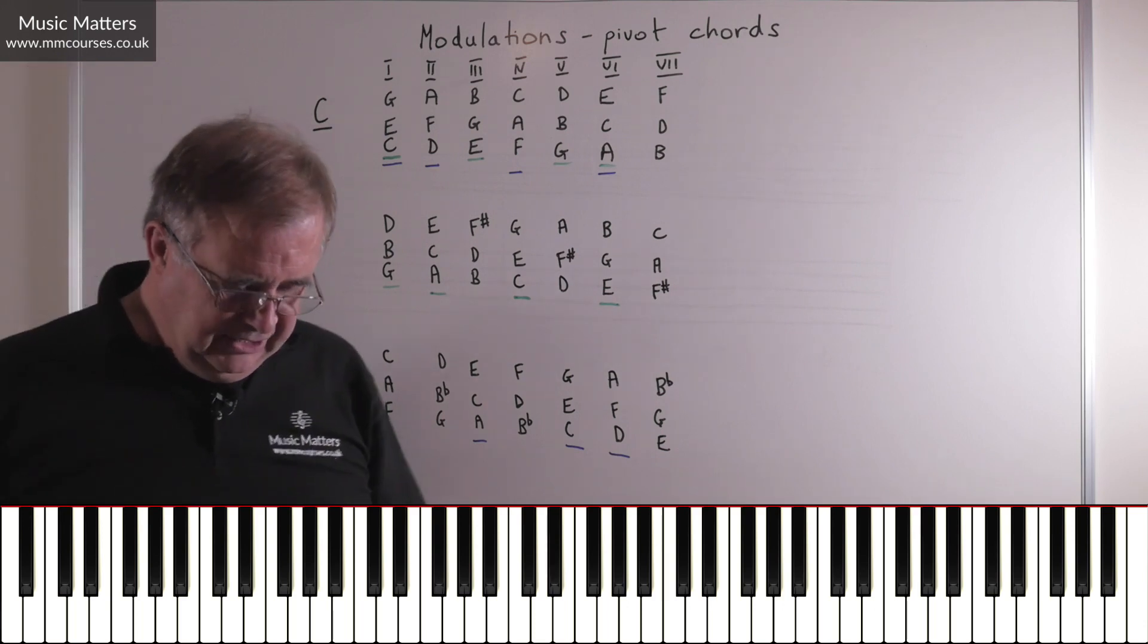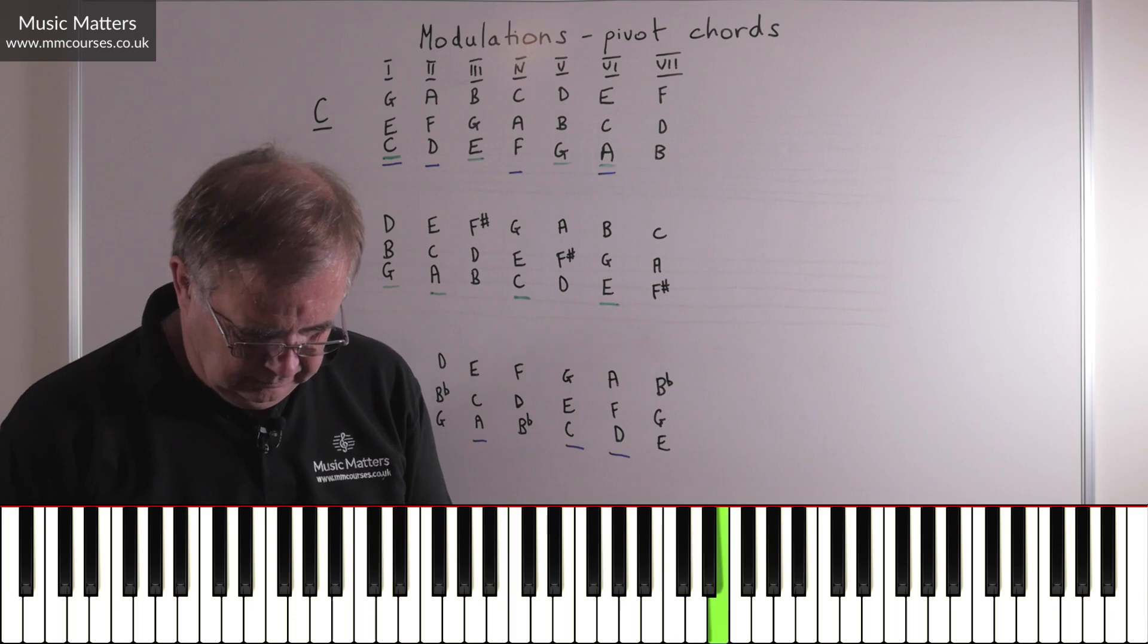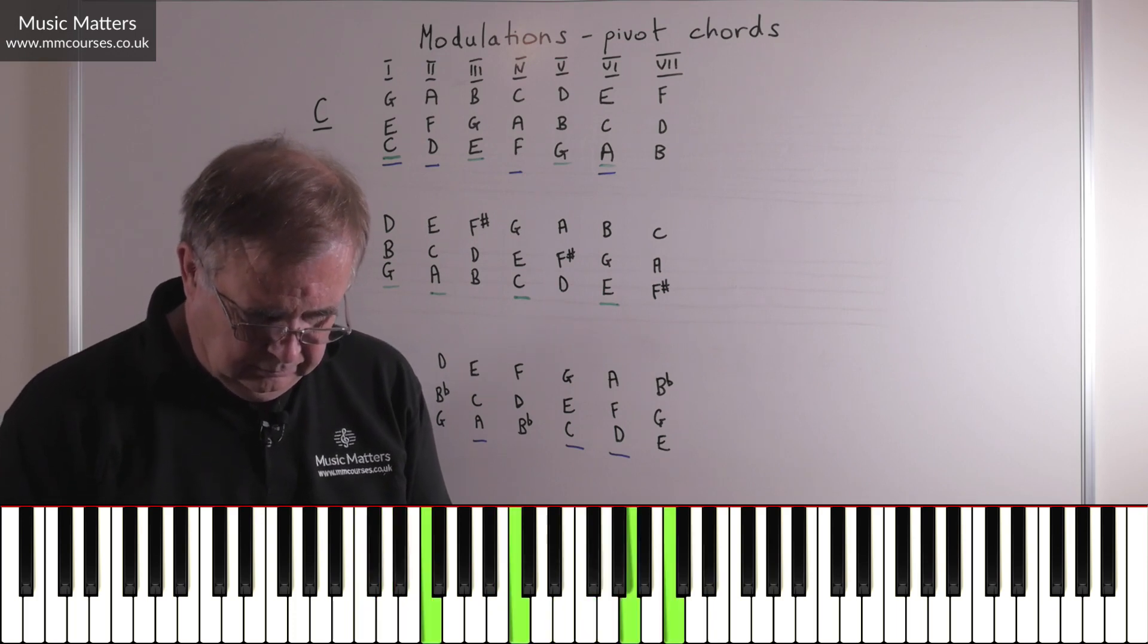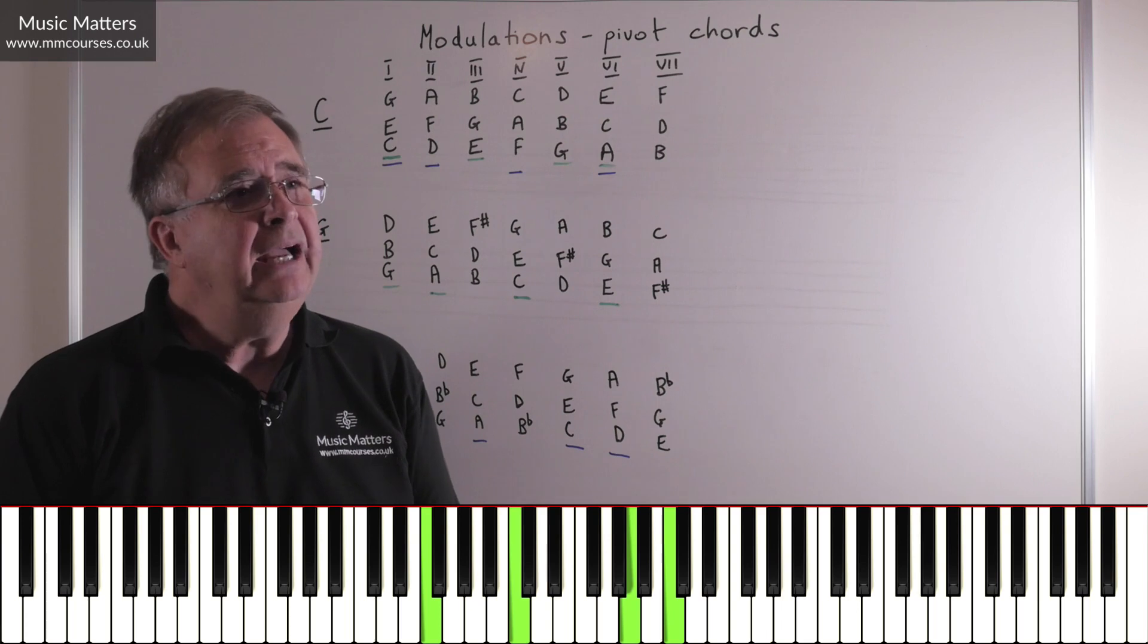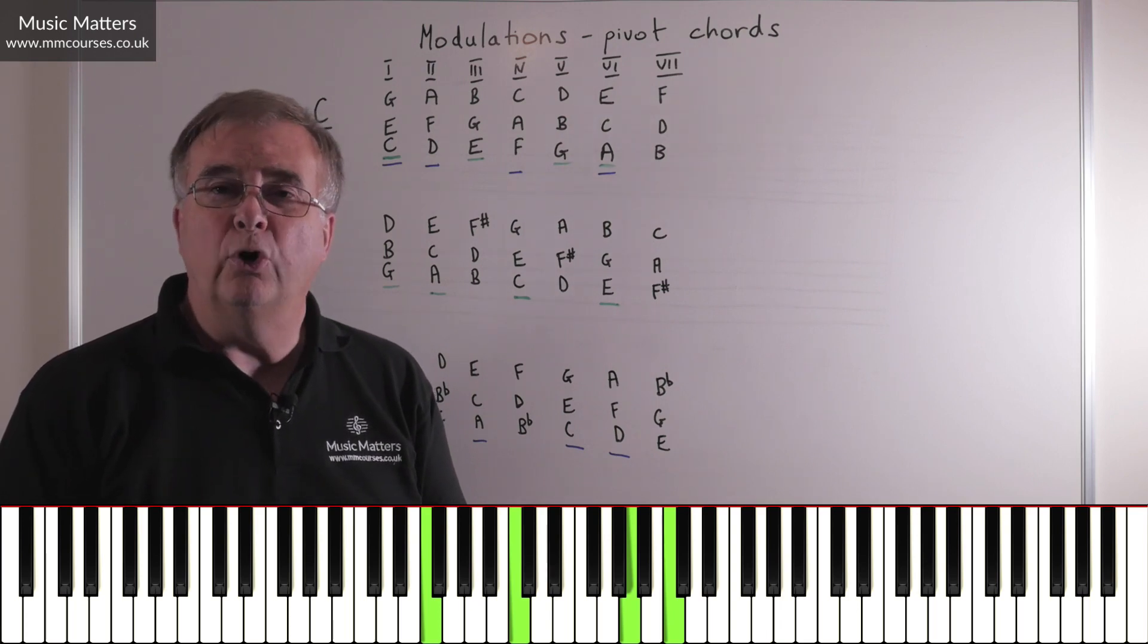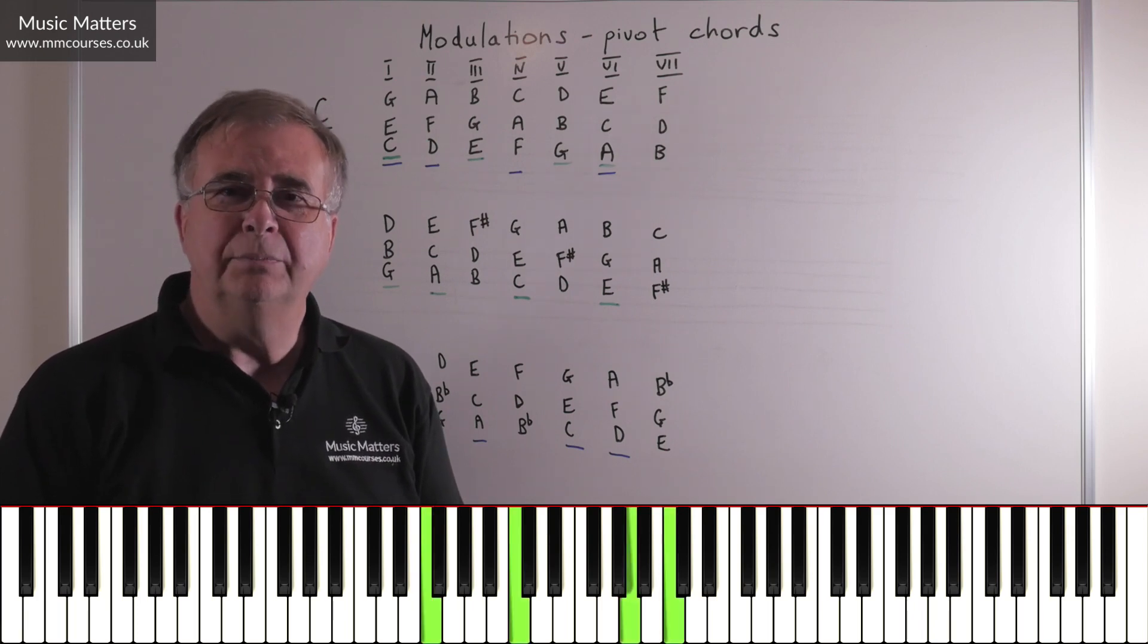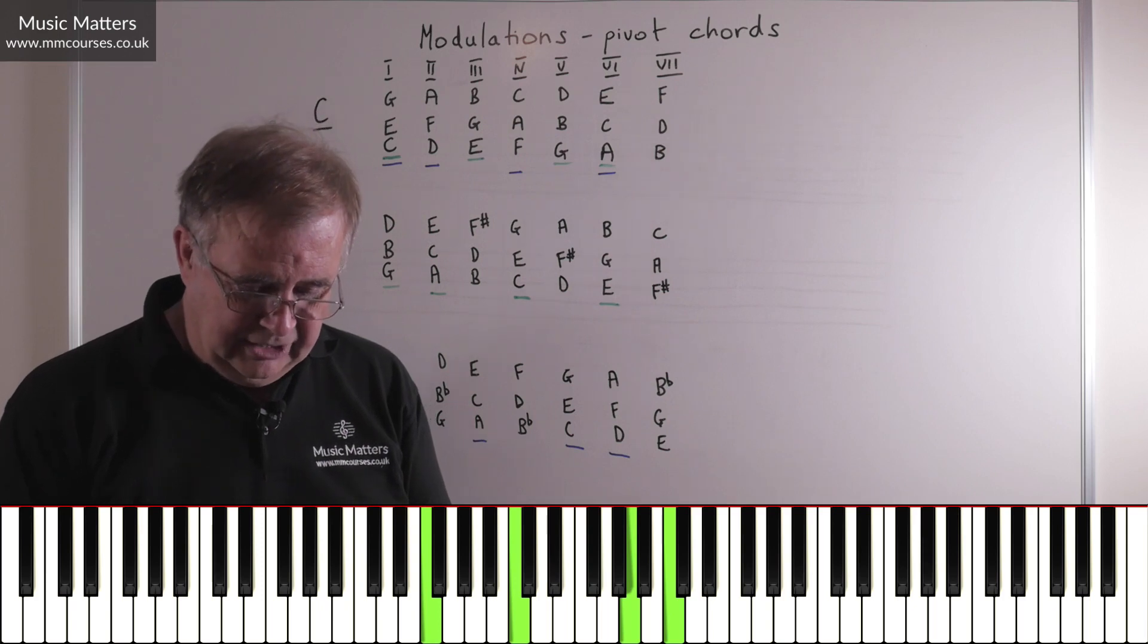So if this time I start in C major, I might stop there and I think, okay, what's going on here? That's chord IV in C major, but it's also called I in F major. So having been through that as a pivot chord, I can then carry on in F major.